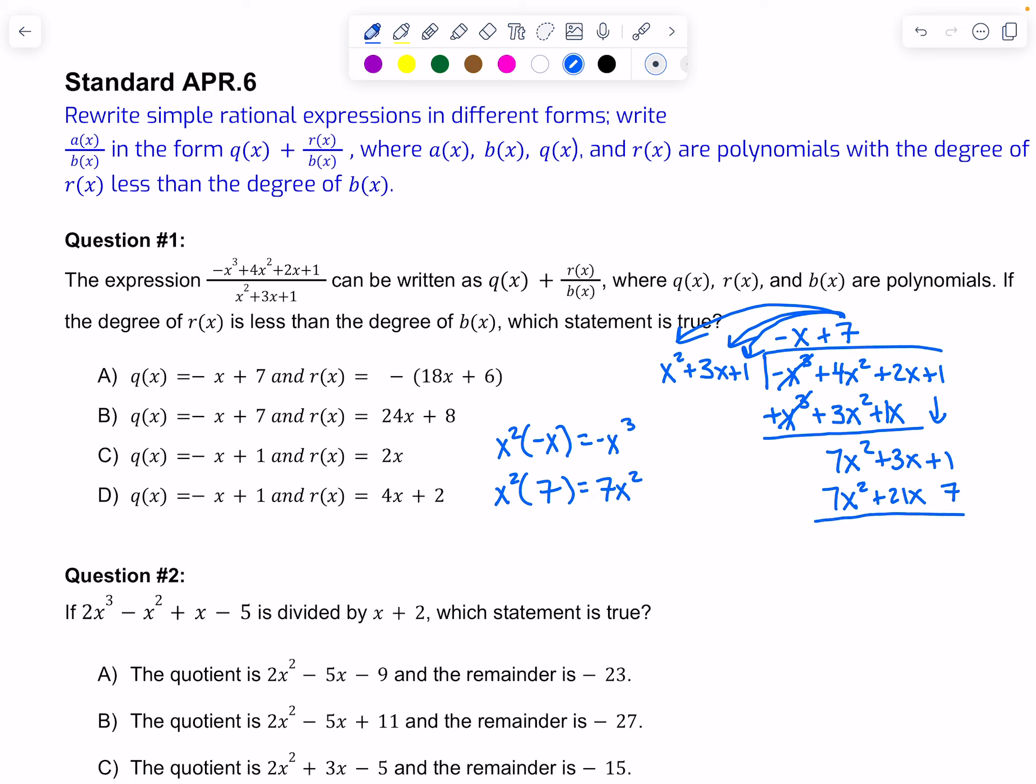Before we go any further, let's take a look at our answer choices. We have negative x as our first part of the quotient, but all of them had negative x. So that doesn't eliminate any answers. But now we see we have a 7, and A and B have 7, but C and D had a 1. So we're already down to A or B.